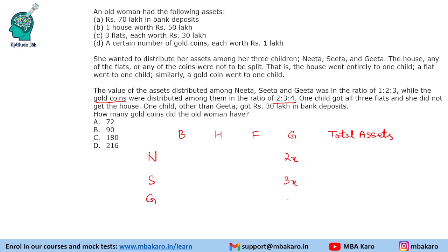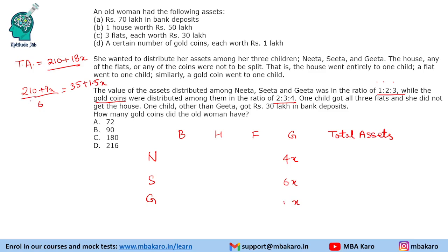Gold coins are distributed in ratio 2:3:4, so let them be 2x, 3x, and 4x. Total assets are 210 lakhs plus 9x, distributed in ratio 1:2:3, giving 6 parts, or 35 + 1.5x each. To avoid decimals, scale to 18x gold coins: 4x, 6x, and 8x. Each part becomes 35 + 3x. So Nita gets total assets of 3x + 35, Sita gets 6x + 70, and Geeta gets 9x + 105.